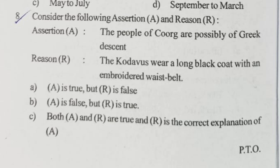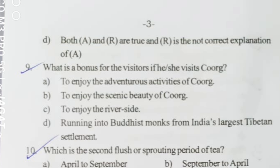Greek descent relates to assertion A, and the reason about the waistband is also true. But R does not explain A correctly. Therefore option D — both A and R are true and R is not the correct explanation of A — is the answer.